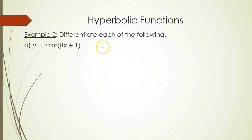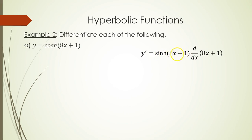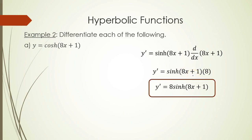Example two: differentiate y equals hyperbolic cosine of (8x + 1). To take the derivative, y prime equals — the derivative of hyperbolic cosine is hyperbolic sine — so hyperbolic sine of (8x + 1). Because you had something other than x within the function, by the chain rule, you take the derivative of that inside piece. This produces a factor of 8, which goes out front, not inside the function. So y prime equals 8 hyperbolic sine of (8x + 1).